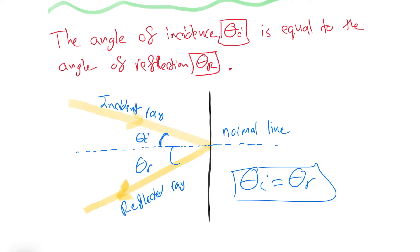Let's say the light is hitting at 30 degrees. It will be bouncing off at 30 degrees.